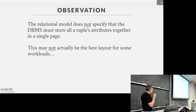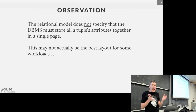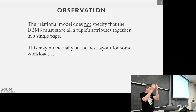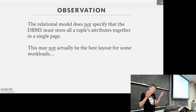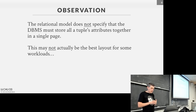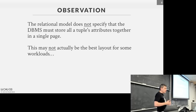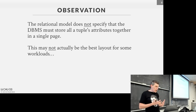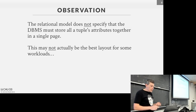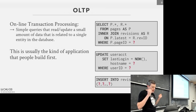The relational model does not define or specify anything about how we should store the data in a table. In all the examples shown so far, we're storing every attribute one after another. There's nothing in the relational model that says you have to do that — it's just what we as humans came up with first. But for OLAP workloads, this may not be the best thing.